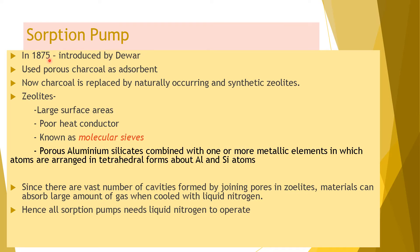The sorption pump was introduced by the scientist Dewar in 1875, using porous charcoal as the adsorbent. Today, charcoal has been replaced by naturally occurring synthetic zeolites. Zeolites have large surface areas, are poor heat conductors, and are mainly known as molecular sieves. They are porous aluminum silicates combined with one or more metallic elements, with atoms arranged in tetrahedral forms around aluminum and silicon atoms.